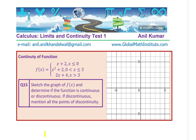Question number fifteen is based on continuity. F of x equals x plus 2 when x is less than or equal to 0; equals x squared plus 2 when x is between 0 and 3 (where 3 is included); and equals 2x plus 1 when x is greater than 3. Sketch the graph of f of x and determine if the function is continuous or discontinuous. If discontinuous, mention all the points of discontinuity. You need to use the concept of limits to verify whether the function is continuous or discontinuous.